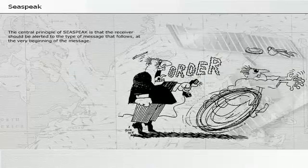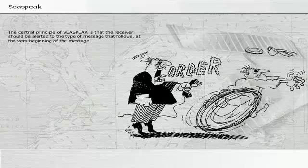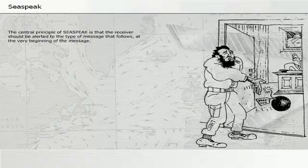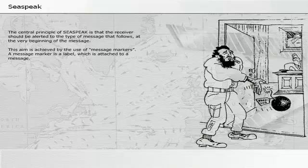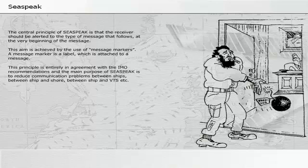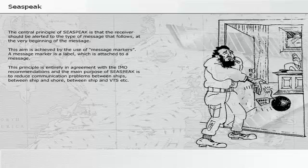The central principle of Seaspeak is that the receiver should be alerted to the type of message that follows at the very beginning of the message. This is achieved by the use of message markers — a label attached to a message. This principle is entirely in agreement with IMO recommendations, and the main purpose of Seaspeak is to reduce communication problems between ships, between ship and shore, and between ship and VTS.